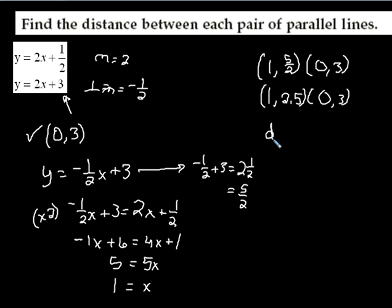Distance formula. Distance is the square root of the difference of the x-coordinates - let's do the x-coordinates first - 1 minus 0 is 1 squared, and the difference between the y-coordinates. How far is it from 2.5 to 3? Well, that's only 0.5.